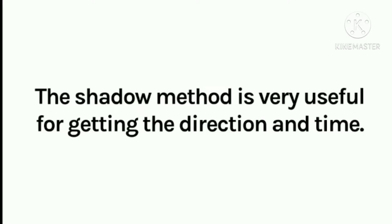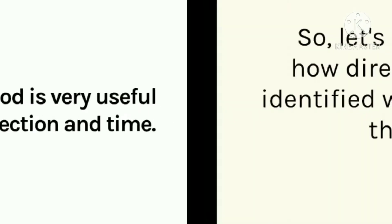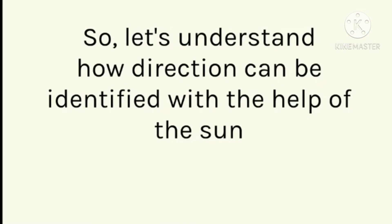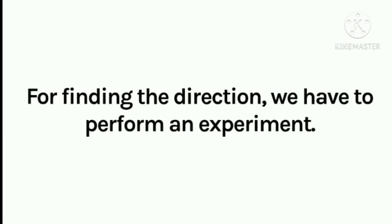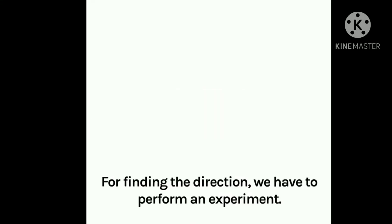The shadow method is very useful for getting the directions and time. So let us understand how directions can be identified with the help of the sun. For finding the directions we have to perform an experiment.